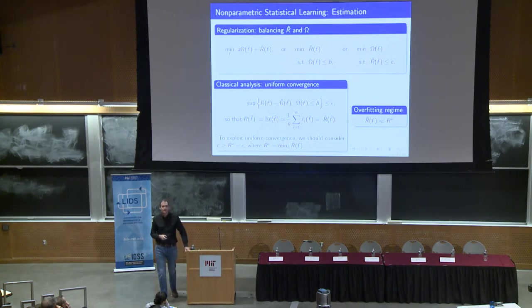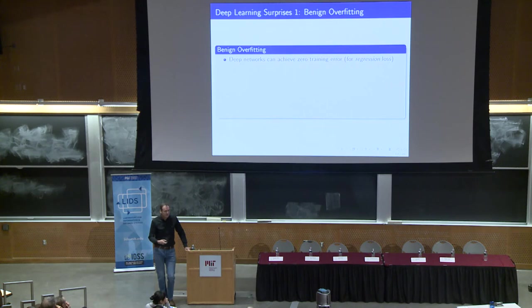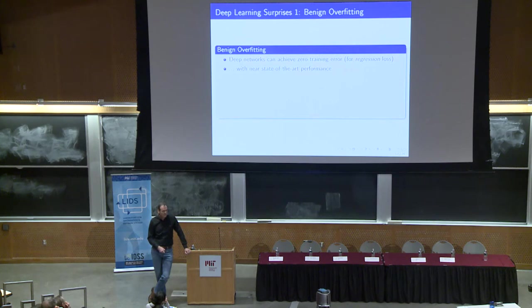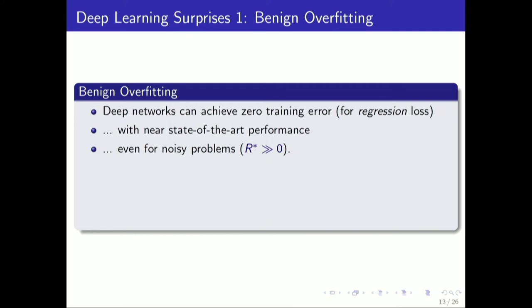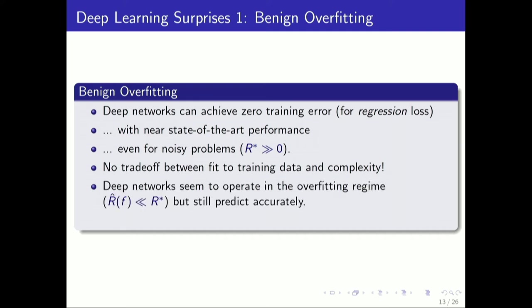We might wonder why such an f would be an effective prediction rule. But that's exactly the regime where deep learning works. There's this phenomenon. This is kind of the number one surprise, I think, from deep learning methodology. These methods produce functions that achieve zero training error for regression loss, like this squared loss example, with near state-of-the-art performance. You can do a little better with some added regularization, but not a whole lot better. That's really striking, even when you're in a noisy problem, because this R*, you know, is significantly bigger than zero.